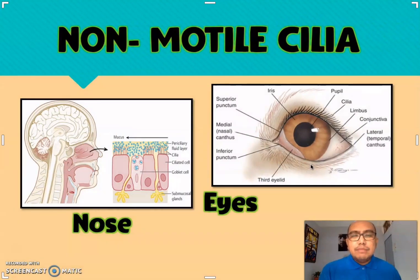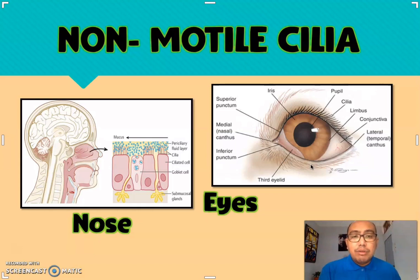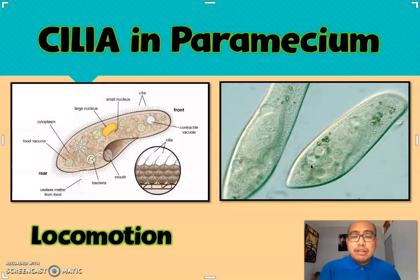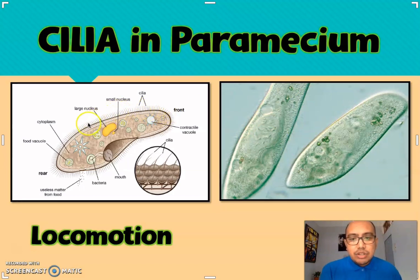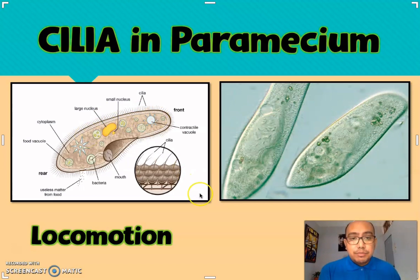How about non-motile cilia? We have the non-motile cilia found on our nose, and we also have non-motile cilia that can be found on our eyes. Cilia can also be found in some lower organisms such as in paramecium, where the main function is for locomotion — these tiny hair-like structures on the sides of the paramecium are the cilia that aid in locomotion or for engulfing prey.